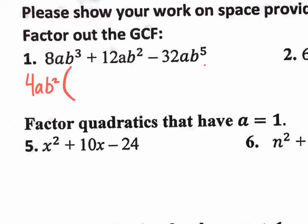That is your GCF. And if you do pull out that GCF, what would be left on the inside? It's like reverse distributive property. 4AB² times what will get you 8AB³? Well, 4 times 2 gets you 8. A times 1 gives you A — you don't have to put the 1. And B² times B will get you B to the third. So we need to put a B right in there, and that would be the first term inside the parentheses.